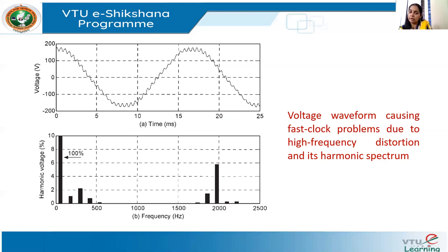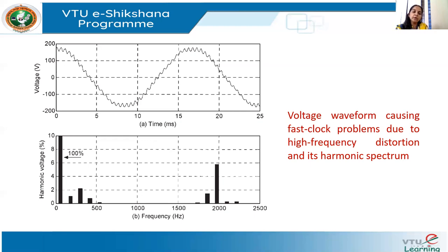This problem is called the fast clock phenomenon. It occurs when there are more zero crossings than expected within a half cycle. Because power system frequency error is generally negligible — fluctuating only between about 49.7 and 51.5 Hz — these clocks are normally very accurate. But here, the clocks are giving erratic time at a particular time every day, caused by additional zero crossings from high-frequency distortions.